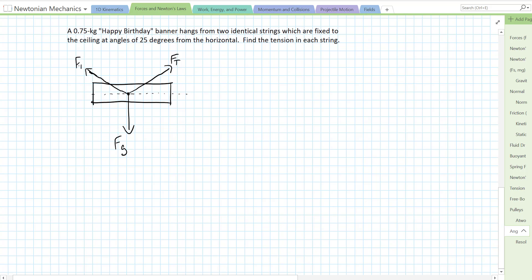Now since they're identical strings and they're at the same angle of 25 degrees, I'm using the same variable for both of them because they're going to end up being equal. Now we need to find the tension in each string, so let's solve for all the forces we can and then let's resolve our vectors into components and use Newton's second law to figure out what we can figure out.